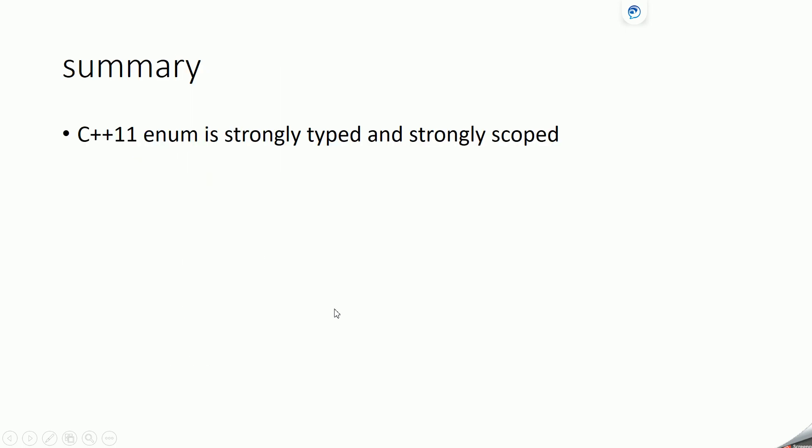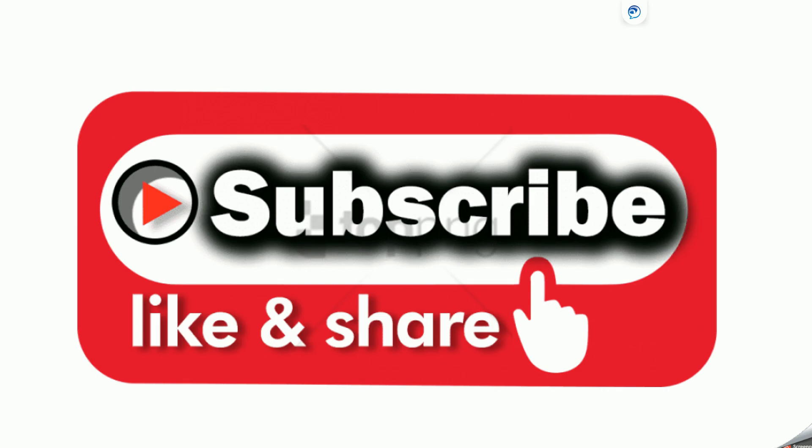In summary, C++11 enum is strongly typed and strongly scoped, limiting the scope of the enumeration constants. This is how C++11 enum class is useful. Thanks for watching — if you like this video please subscribe to my channel and hit the like button.